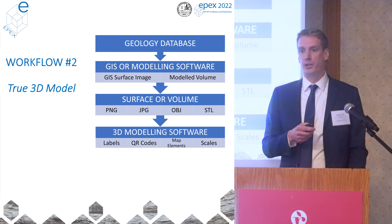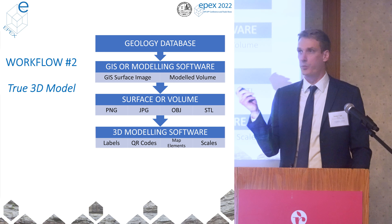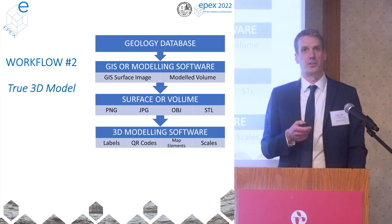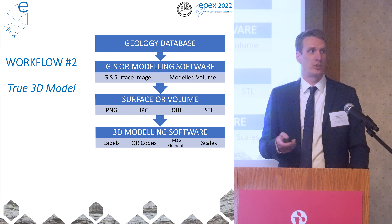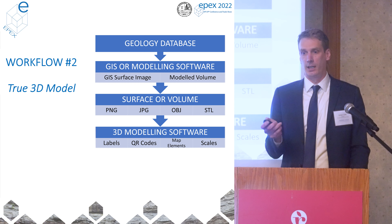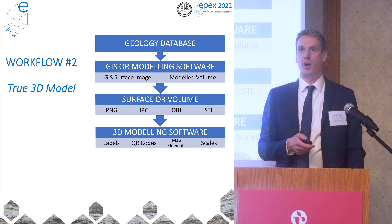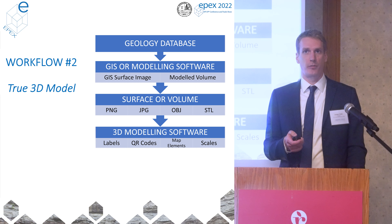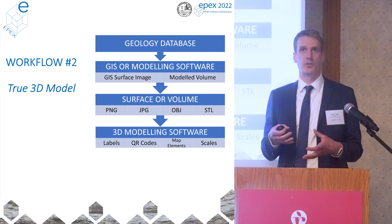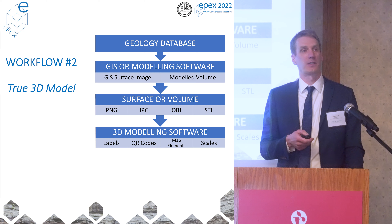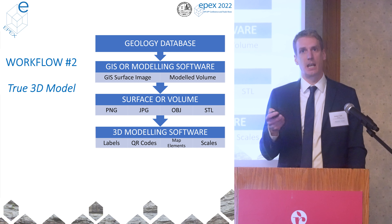There are a number of different file formats you can use: image formats, OBJ format — which is what we used, a Wavefront object, a standard three-dimensional file — or an STL, which is a standard triangle library or standardized tessellation language, another way of representing three-dimensional objects, especially in CAD. Then we take this into our three-dimensional modeling software. In our case we use Blender, which is open source, but you could also use CAD-based software. We bring it into this 3D software to add elements like labels, QR codes, scale bars, and north arrows.